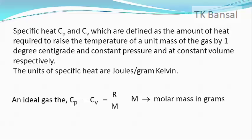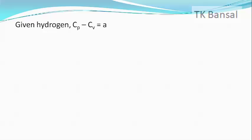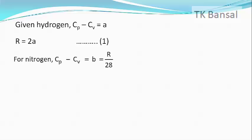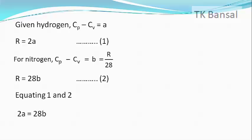For hydrogen, C_p − C_v = A = R/2, since the molar mass of hydrogen is 2 grams, so R = 2A. For nitrogen, C_p − C_v = B = R/28, since the molar mass of nitrogen is 28 grams, so R = 28B. Equating these two expressions: 2A = 28B, giving A = 14B, which matches option A.